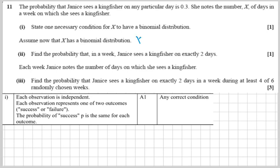So we have here a binomial distribution where some variable X, which up here is the number of days in a week on which she sees a kingfisher, is binomially distributed with n equals seven.